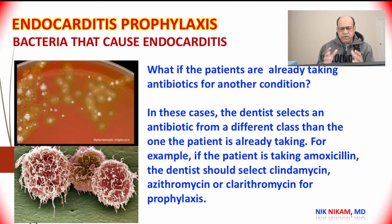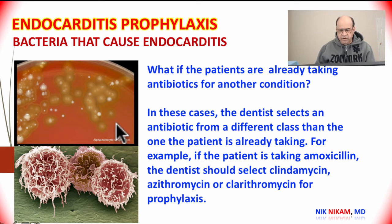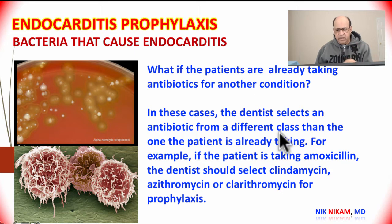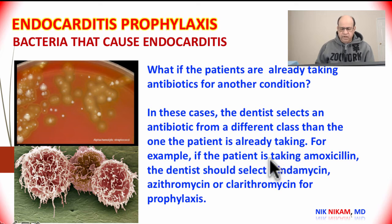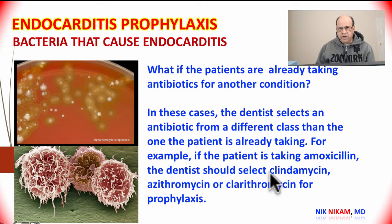A question arises: what if a patient is already taking an antibiotic for some other reason? In those cases, the dentist recommends using an antibiotic of a different class — other than the one the patient is already taking. For example, if the patient is taking amoxicillin, then the dentist would select something like clindamycin, zithromycin, or clarithromycin for endocarditis prophylaxis.